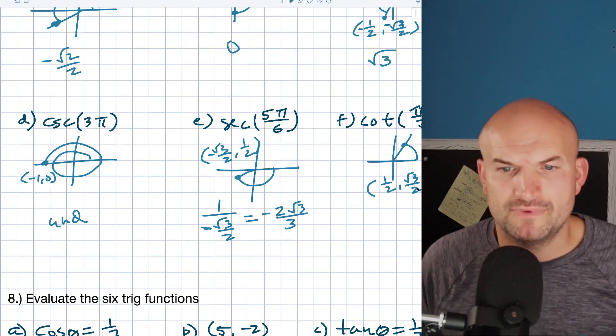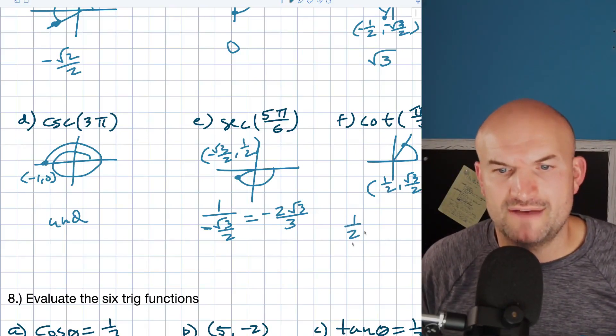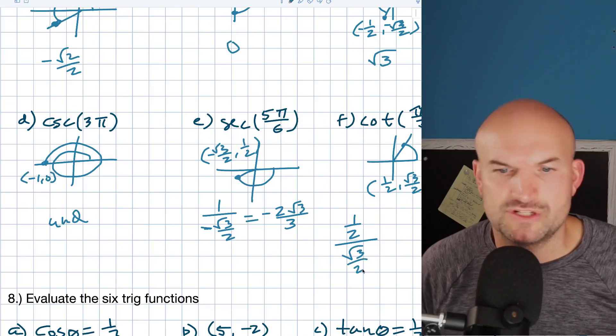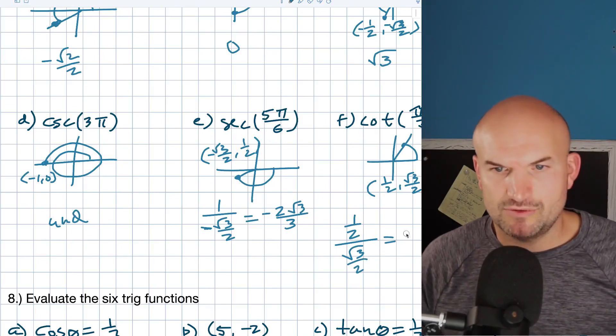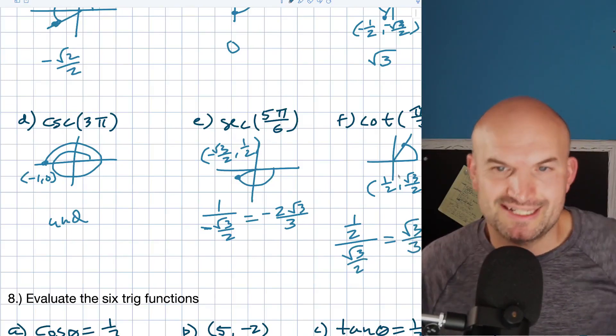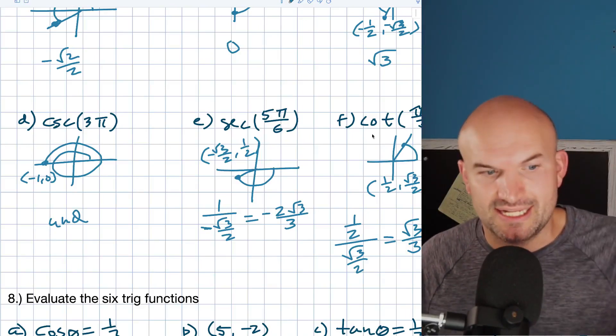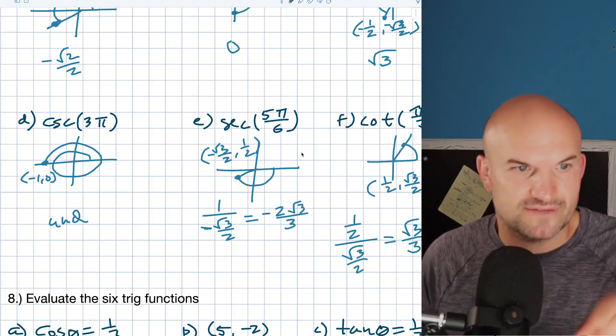And cotangent is going to be x over y. So, that's going to be a 1 half over a square root of 3 over 2. And that's going to equal to a square root of 3 over 3. And that's going to remain positive because it's in the first quadrant.